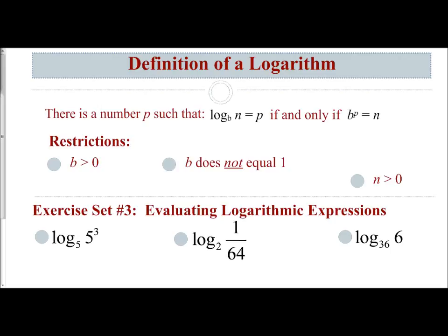There is a number p such that log base b of n equals p if and only if b to the p power equals n. This definition is what we covered when we converted between exponential and logarithmic forms - that log base b of n equals p is equivalent to b to the p power equals n.